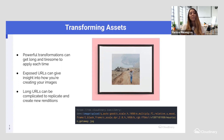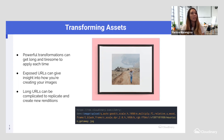Long URLs can be complicated to replicate and create new renditions. For this example, which is more on the customization and personalization side, you may want to be able to apply this to many different assets fast. Transformation presets are a really great way to do this.